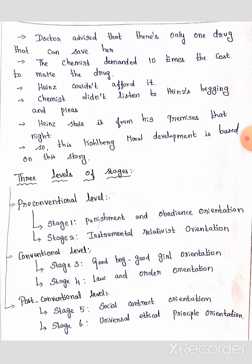The doctor said you have to buy one drug. The druggist demanded ten times the cost to make the drug. Heinz told the druggist to give him the drug but he didn't have the amount. Heinz could not afford it.